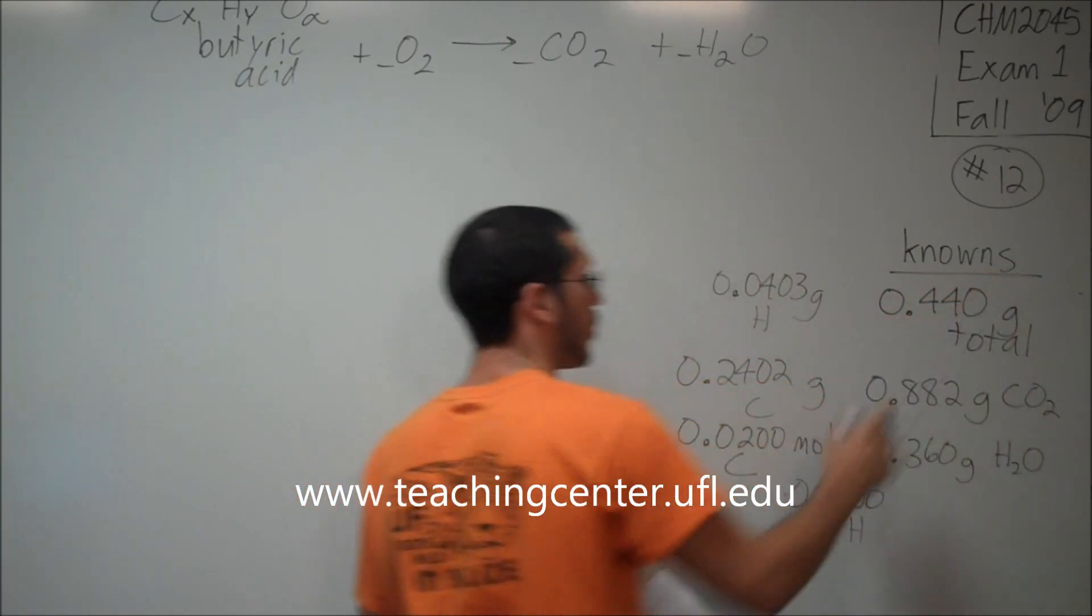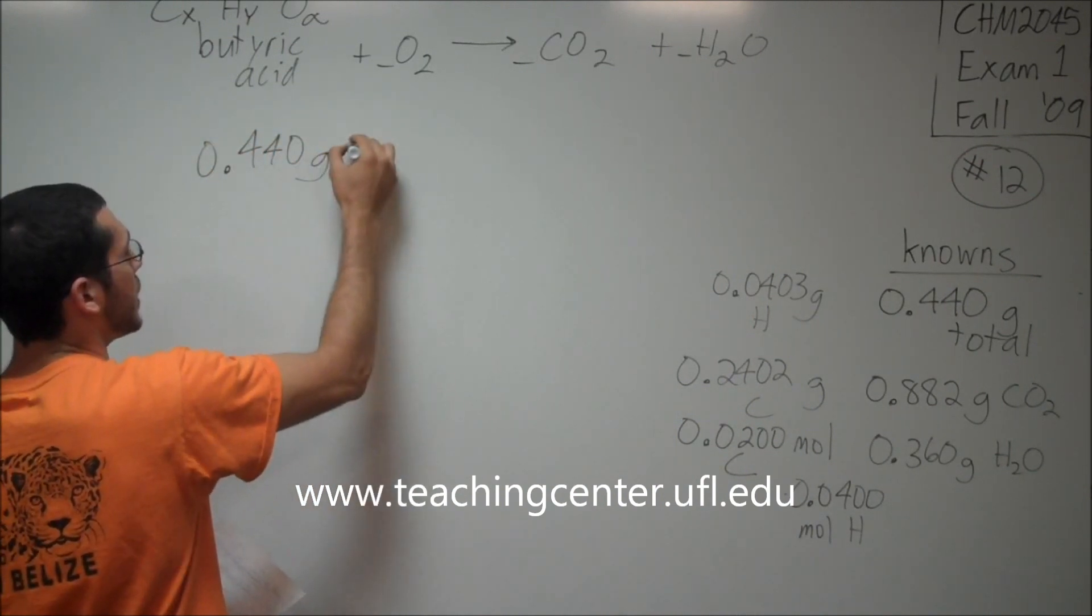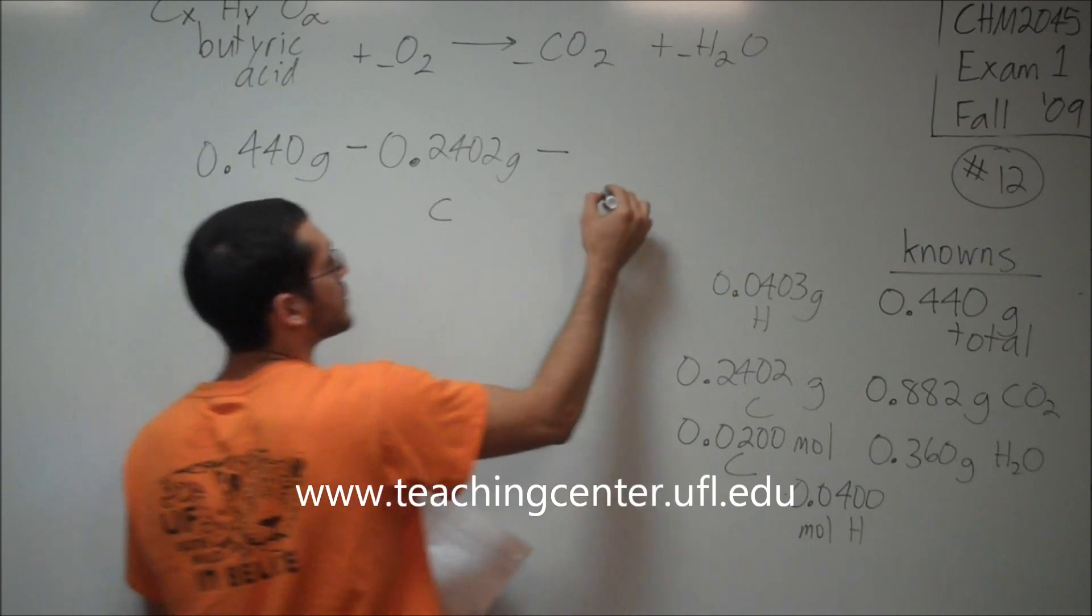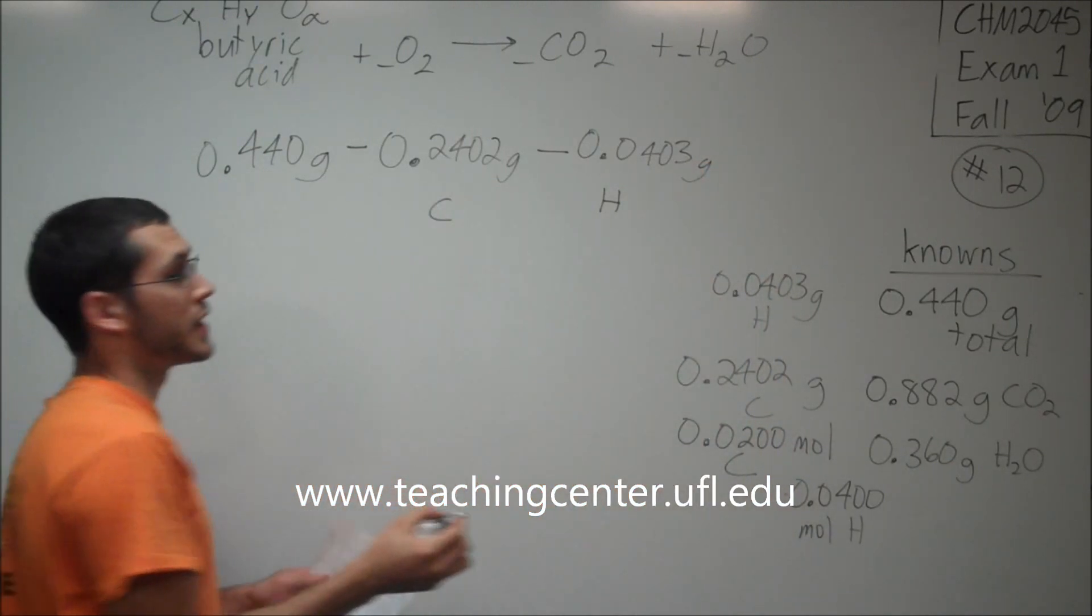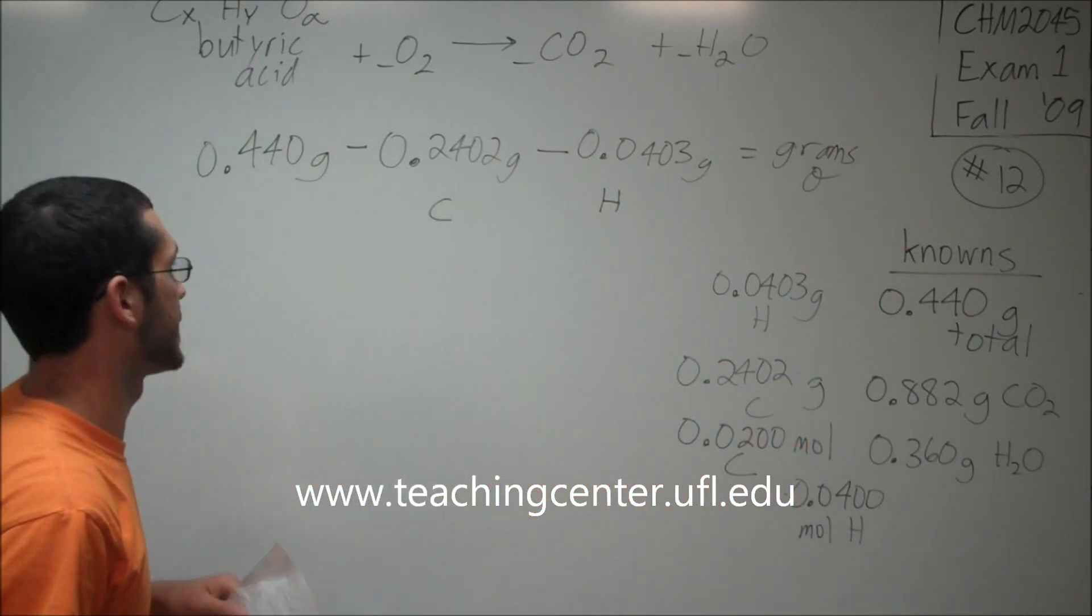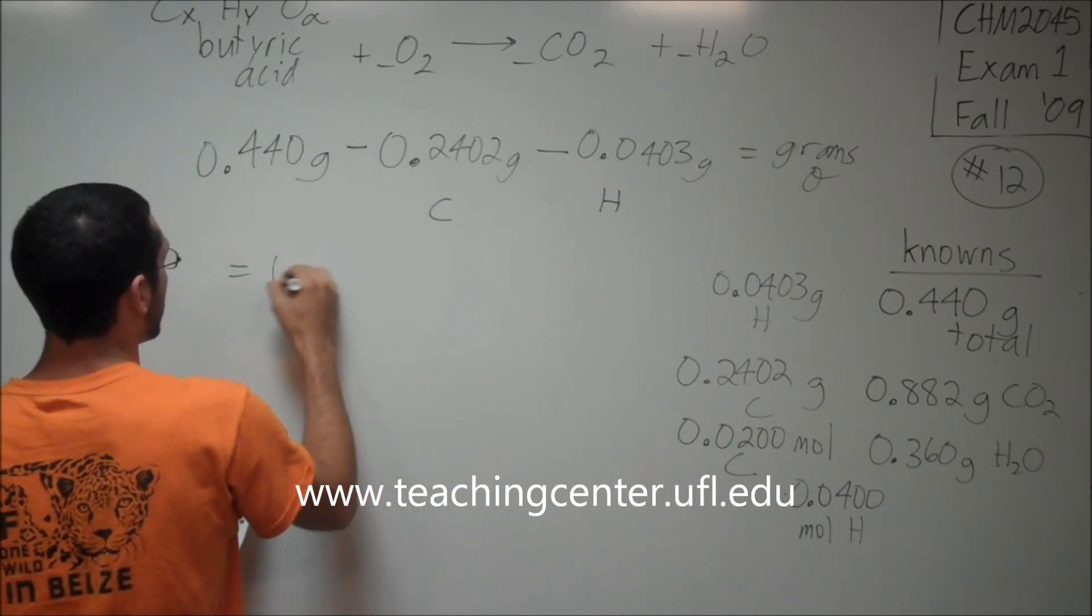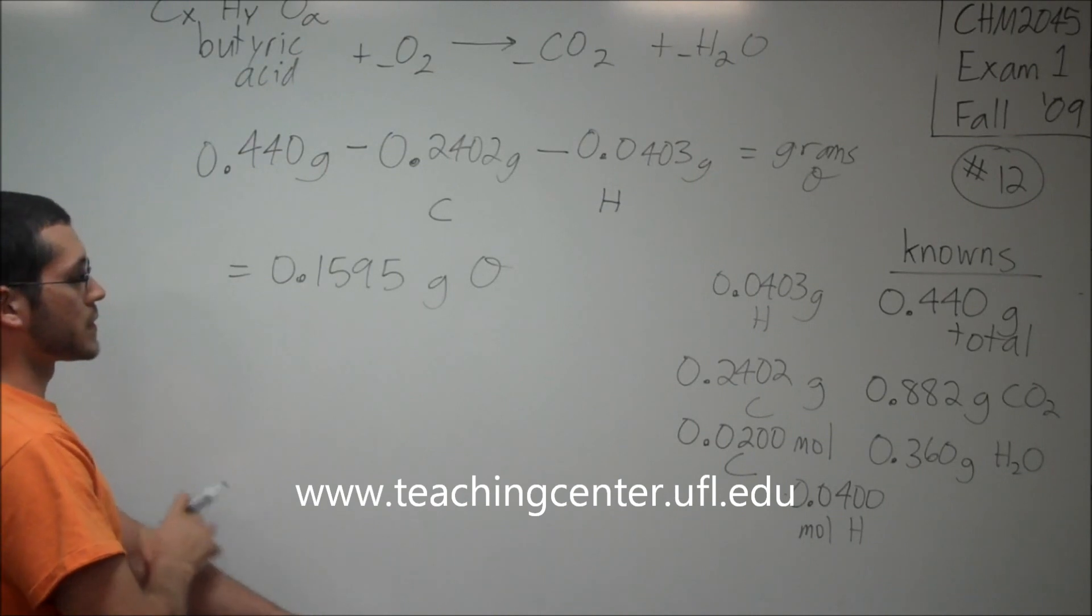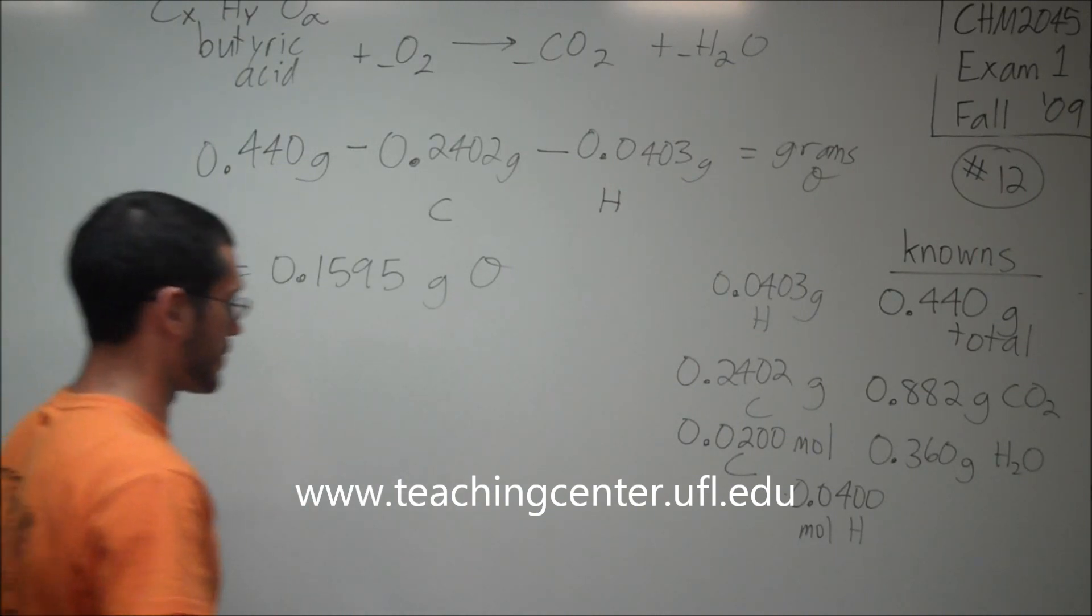The whole thing weighed 0.440 grams. But if we take out all the carbon, 0.2402 grams, and we take out all the hydrogen which is 0.0403 grams, then that's just going to leave us with the grams of oxygen left in the butyric acid. This is going to come out to be 0.1595 grams of oxygen. We've now used all of our known quantities. We are approaching the final answer.